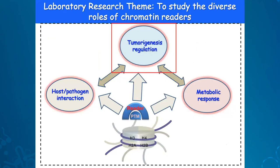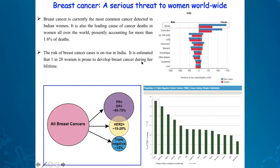Our laboratory is interested in three definitive functional contexts: we look at chromatin readers from the perspective of tumorigenicity regulation, host-pathogen interaction, and metabolic response. For today's talk, we are focusing more on tumorigenicity regulation. Our laboratory is intensely interested in the breast cancer context. Breast cancer is one of the most common cancers detected in Indian women — a leading cause of cancer mortality — with around 1 in 28 women prone to develop breast cancer, and reported new cases are rising.